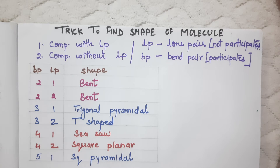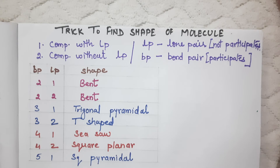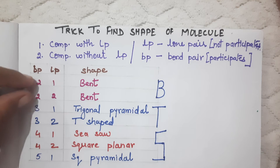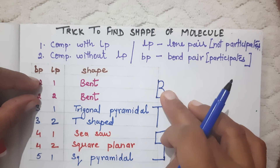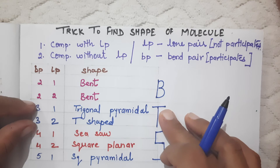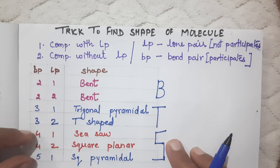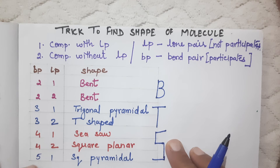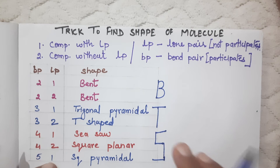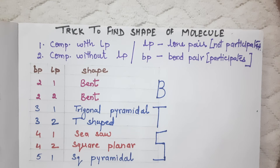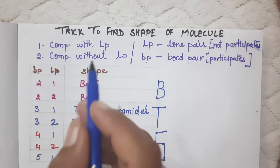Similarly, five bond pairs and one lone pair gives a square pyramidal shape. To learn this, use the mnemonic BTS: B for bent (21, 22), T for trigonal pyramidal (31) and T-shaped (32), S for seesaw (41), square planar (42), and square pyramidal (51).